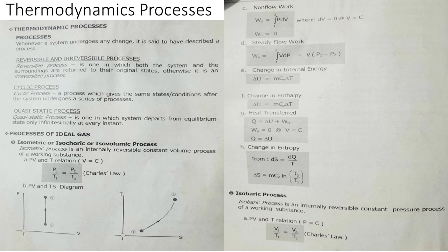In thermodynamic processes, what do we mean by processes? Processes: whenever a system undergoes any change, it is said to have described a process. It may be a reversible or irreversible process. A reversible process is one in which both the system and the surroundings return to their original states; otherwise it is an irreversible process.